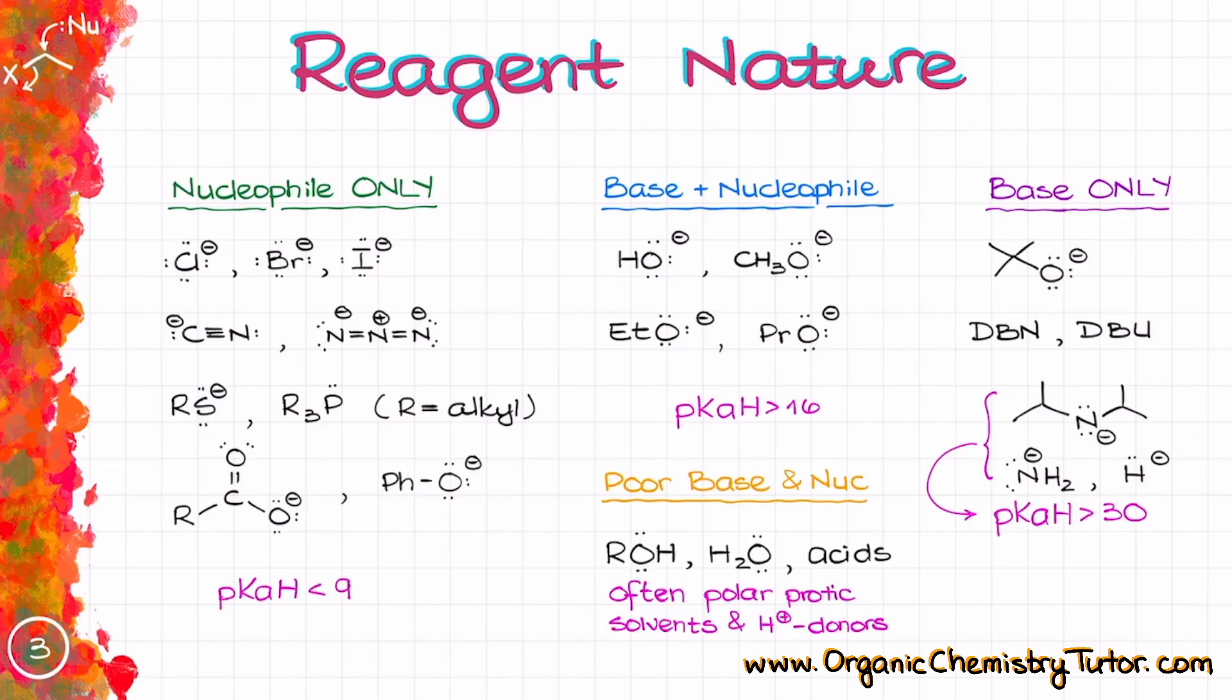Finally, the last category is going to be poor bases and poor nucleophiles, which typically include things like acids, alcohols, and other similar species. Normally, when we think about poor base and nucleophile category, those are going to be most often different polar protic solvents and H+ donors.